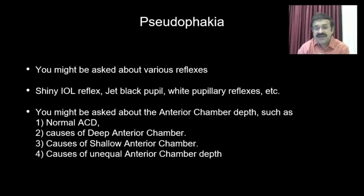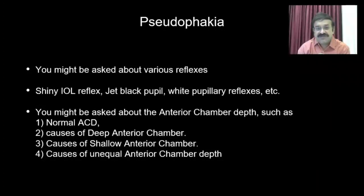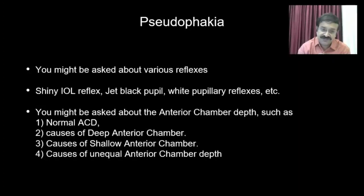You might also be asked about various reflexes: the shiny IOL reflex, jet black pupil, and white pupillary reflexes. The causes of white pupillary reflex are important — these could include pediatric cataracts and all causes of leukocoria such as retinoblastoma, Coats disease, and PHPV.